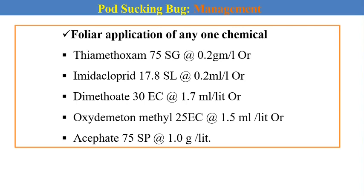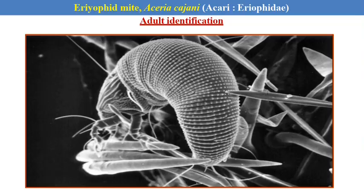For control of pod sucking bugs, we can manage them with foliar application of different chemical pesticides like thiamethoxam, imidacloprid, dimethoate, oxydemeton-methyl and acephate.